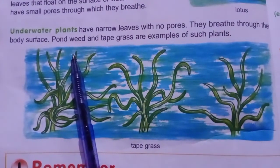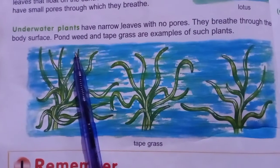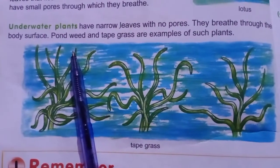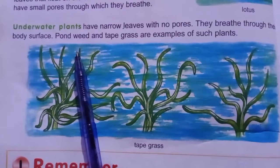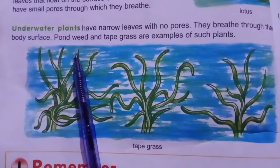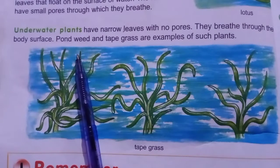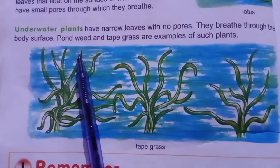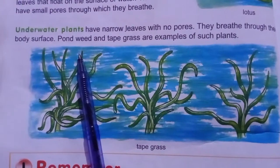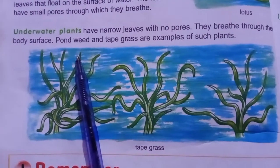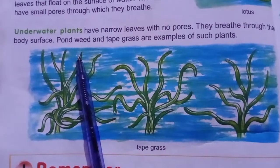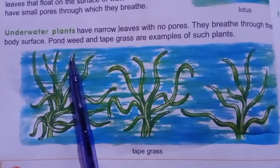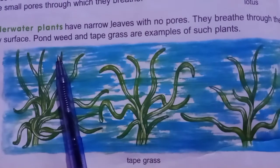Now I am telling you about underwater plants. Underwater plants have narrow leaves with no pores — they breathe through the body surface. وہ پانی کے اندر ہی grow اور survive کرتے ہیں۔ Pond weed اور tape grass ان plants کی examples میں آتے ہیں۔ ہمارے diagram میں tape grass کی picture موجود ہے — یہ tape grass پانی کے اندر ہی survive کرتے ہیں۔